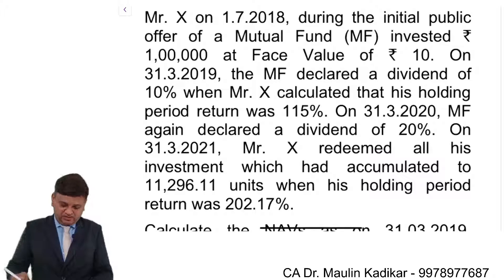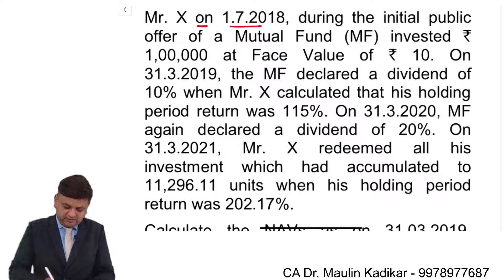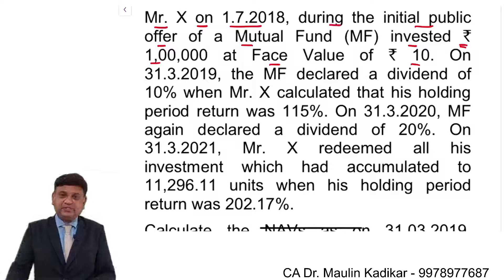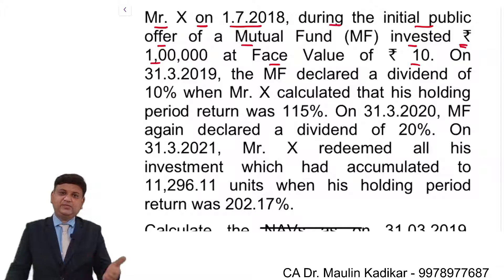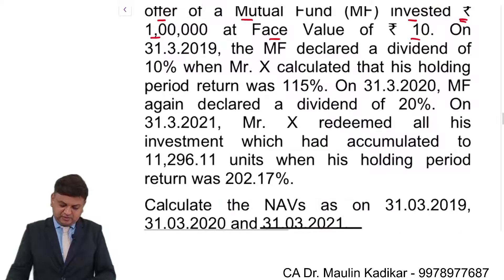Let us see our next question. On 1st of July 2018, Mr. X, during the initial public offer of a mutual fund, invested Rs. 1 lakh at the face value of Rs. 10. So Rs. 1 lakh is the investment, face value is 10 and that is the purchase price also. So 10,000 number of units must have been allotted.